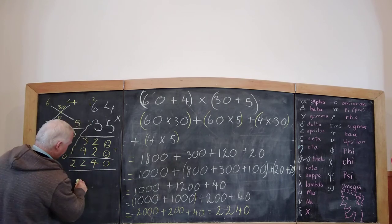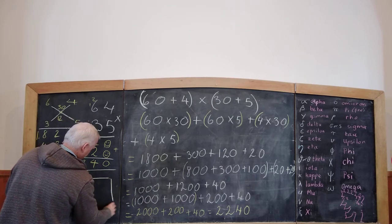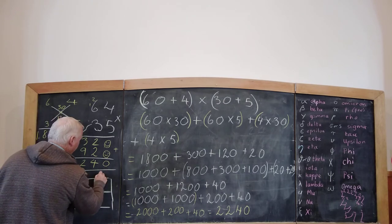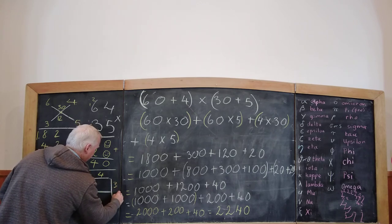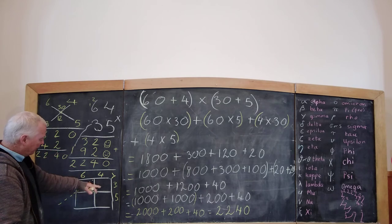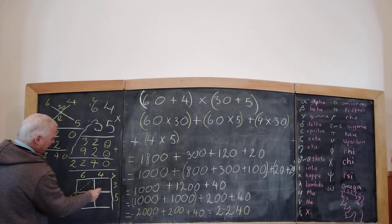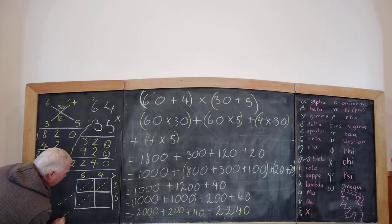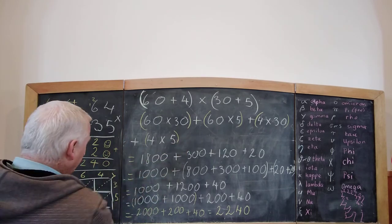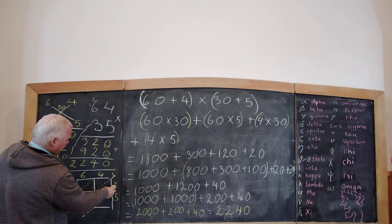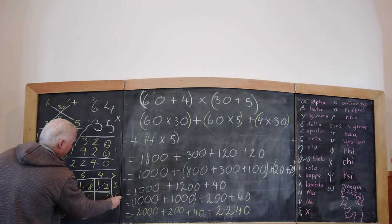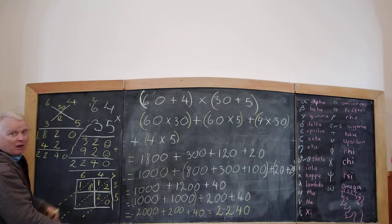So last time I did something like this. I don't think I made it big enough. So we have 64 times 35. Divide the windows, the window panes. Remember this is a window. This is the window pane. Divide each window pane into, from the top right hand corner down to the bottom left hand corner. So we've got 3 times 4 is 12. 3 times 6 is 18. 5 times 4 is 20. 5 times 6 is 30.